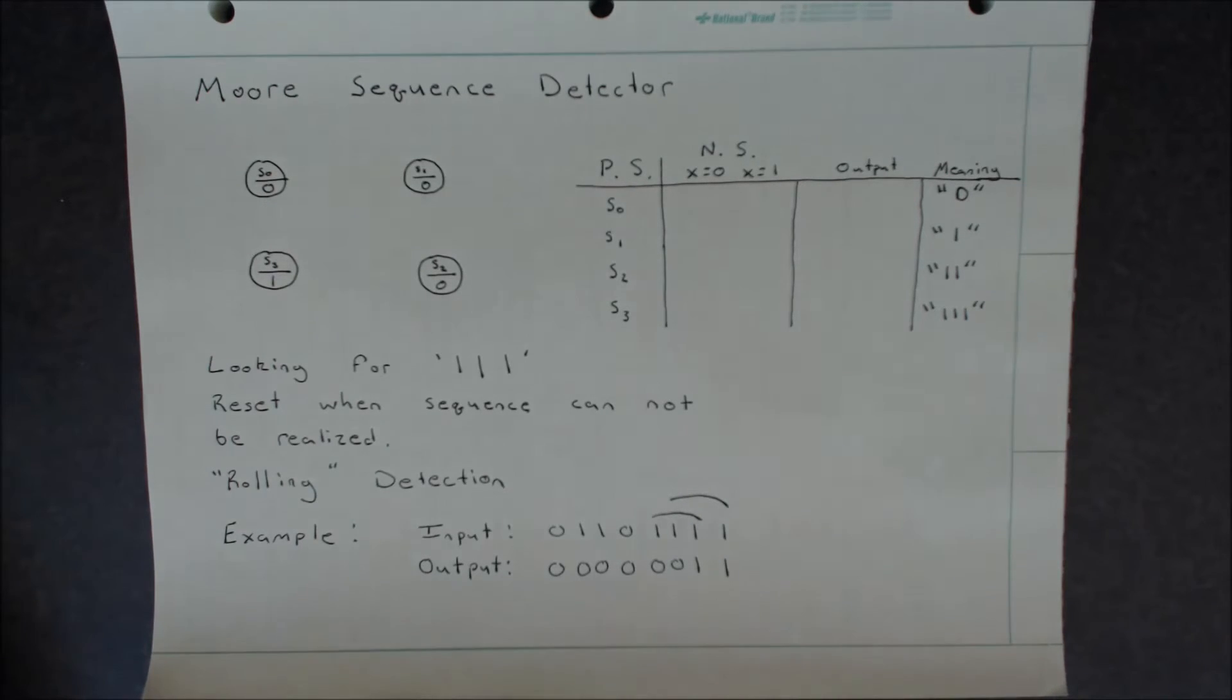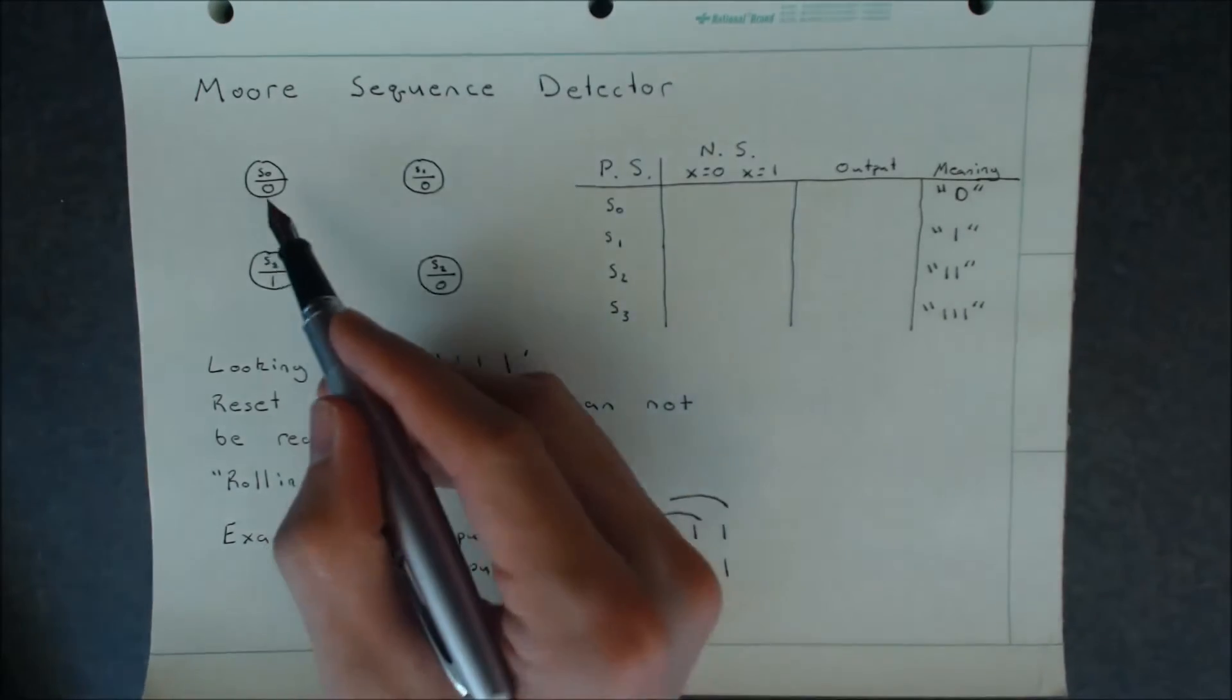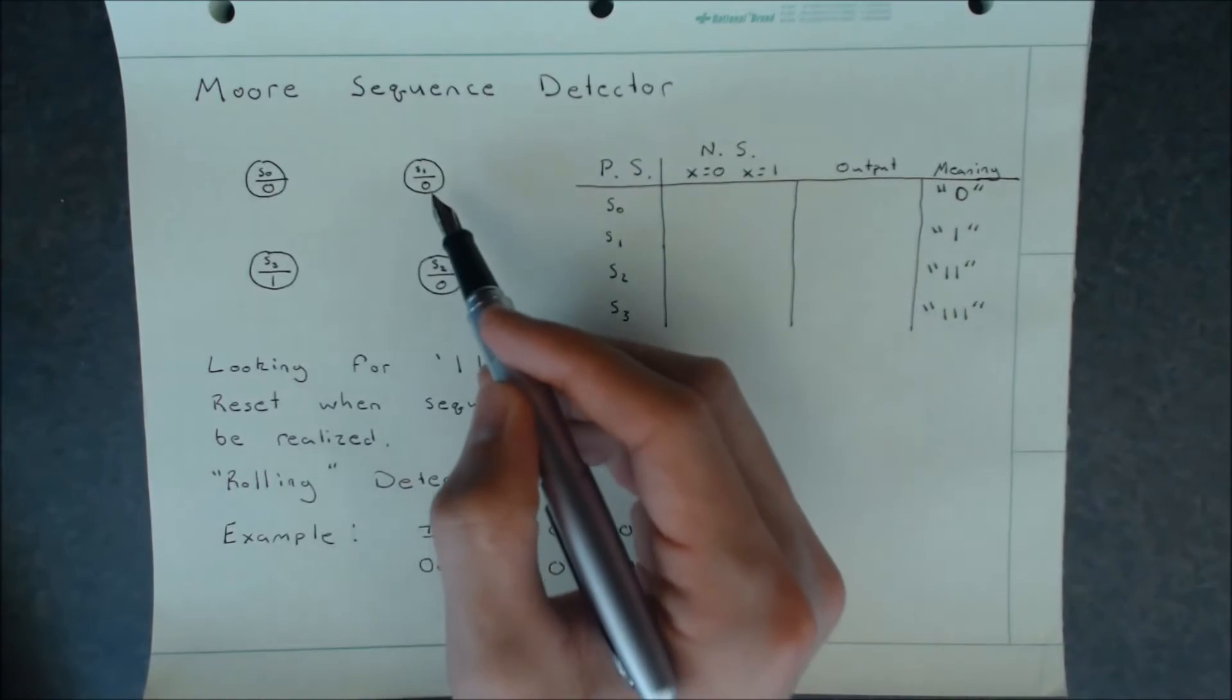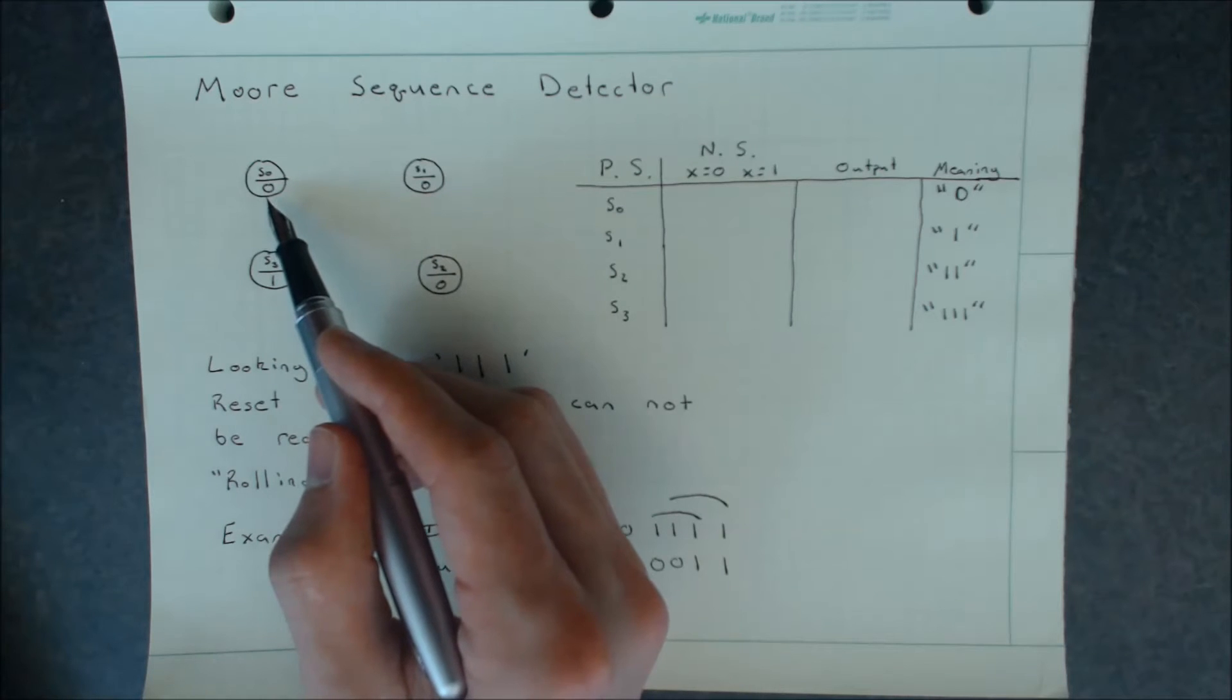If we look at our Moore sequential circuit as it is right now, we have a couple things defined. We have S0, S2, S1, and S3. All of these have an output value already assigned to them.